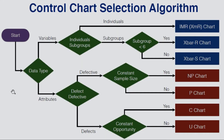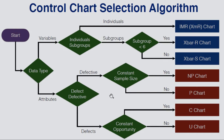Once we know the data type, we follow an algorithm to pick the right control chart. For variables data, we ask: individuals or subgroups? If individuals, we use an IMR chart, also known as an XMR chart. If subgroups, we choose between X-bar R and X-bar S depending on whether the subgroup size is less than 6. For attribute data, we ask whether it is defective or defects. For defectives (type 1 attribute), we pick NP or P chart based on whether sample size is constant. For defects (type 2 attribute), we choose C or U chart based on whether the opportunity is constant. I will illustrate all of these charts in the follow-along session in RStudio.